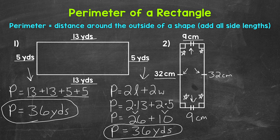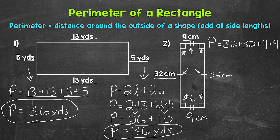As far as the perimeter, let's add all of the side lengths. Perimeter equals 32 plus 32 plus 9 plus 9. 32 plus 32 is 64, plus 9 is 73, plus 9 is 82. So we have a perimeter of 82 centimeters.